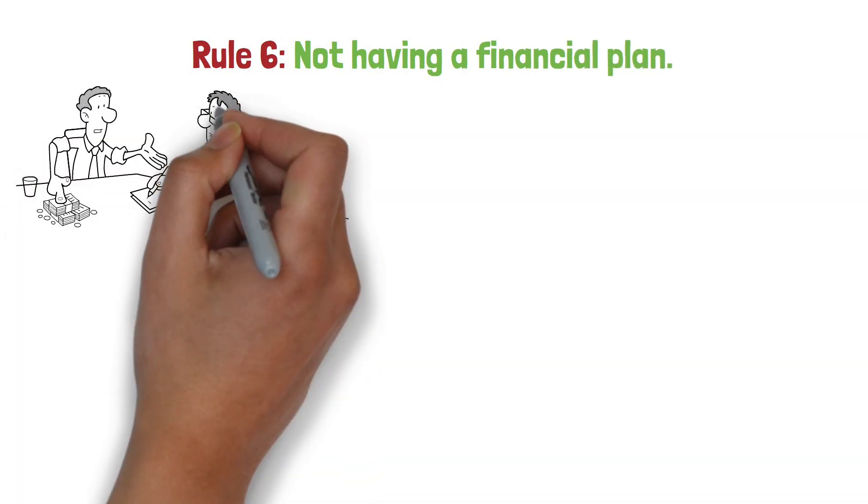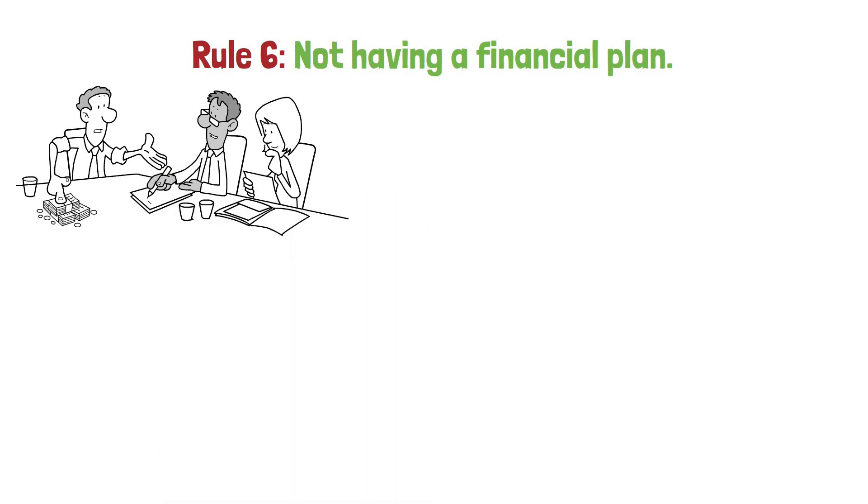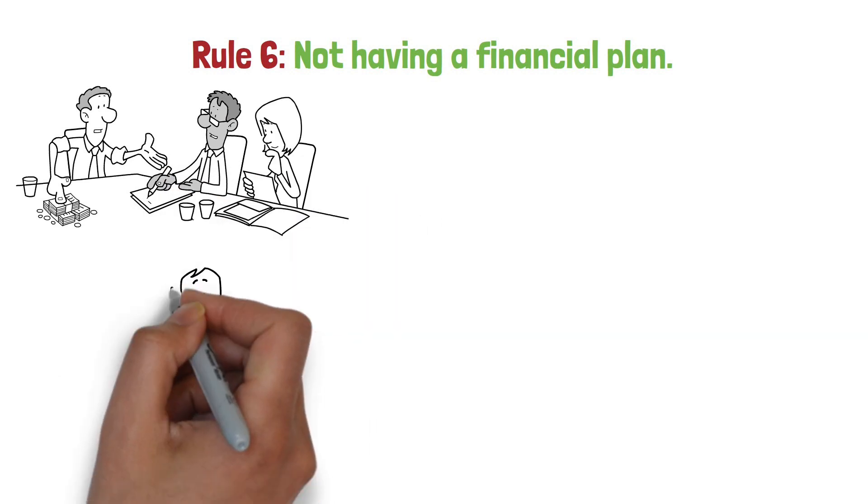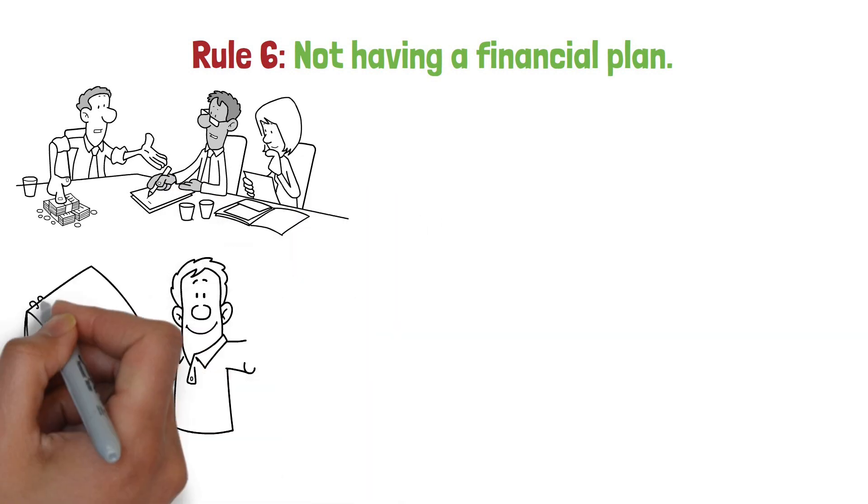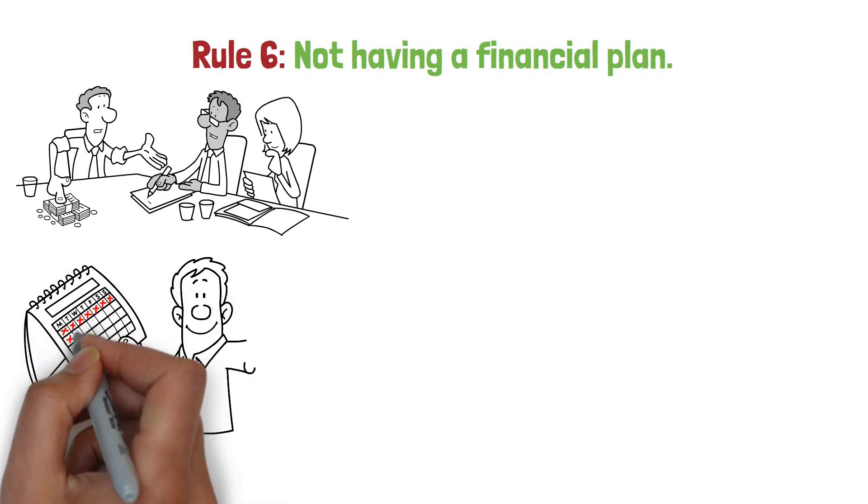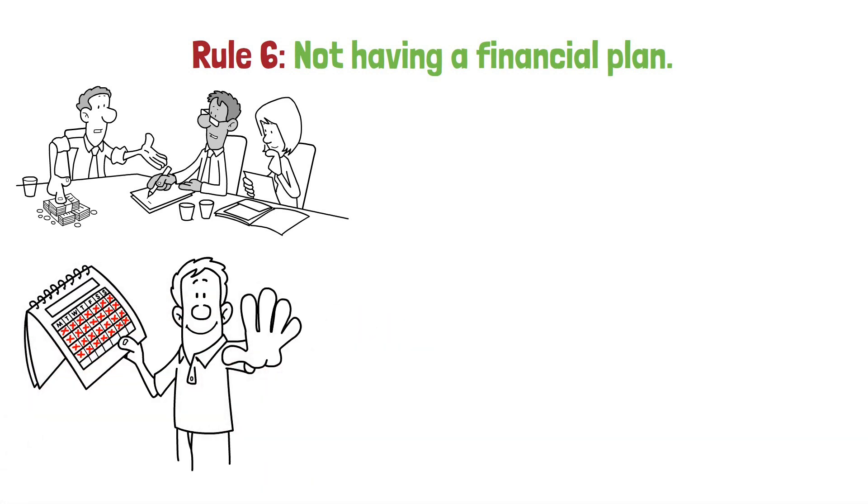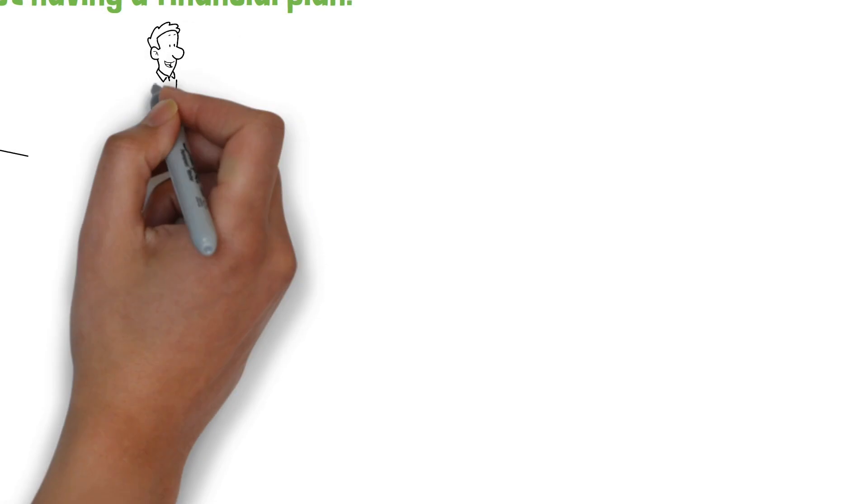Rule 6: Not having a financial plan. In the realm of personal finance, a financial plan is akin to a roadmap guiding you through the treacherous terrain of financial decision-making. Without one, you're like a hiker lost in the wilderness, aimlessly wandering from one impulsive decision to the next.